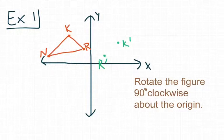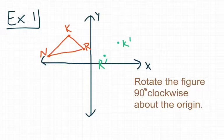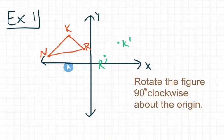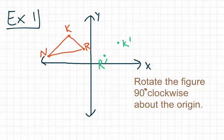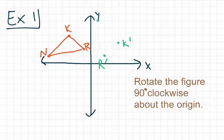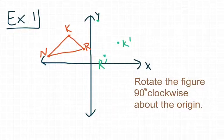Finally, we go on to point N, whose original coordinates are at negative 6 comma 1. And then when we rotate it, N prime is going to end up at 1 comma 6.